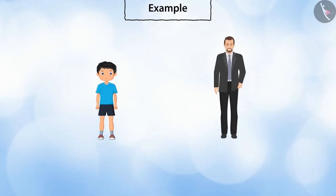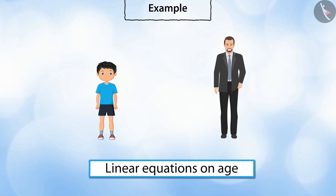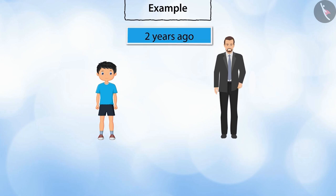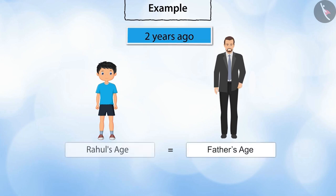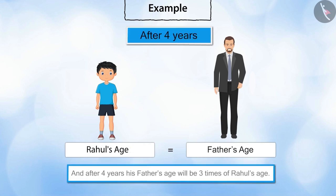Rahul wants to write a linear equation based on his father's age and his own age. Two years ago, his father's age was six times Rahul's age. And after four years, his father's age will be three times that of Rahul's age. Let's find how to express these conditions in algebraic form.